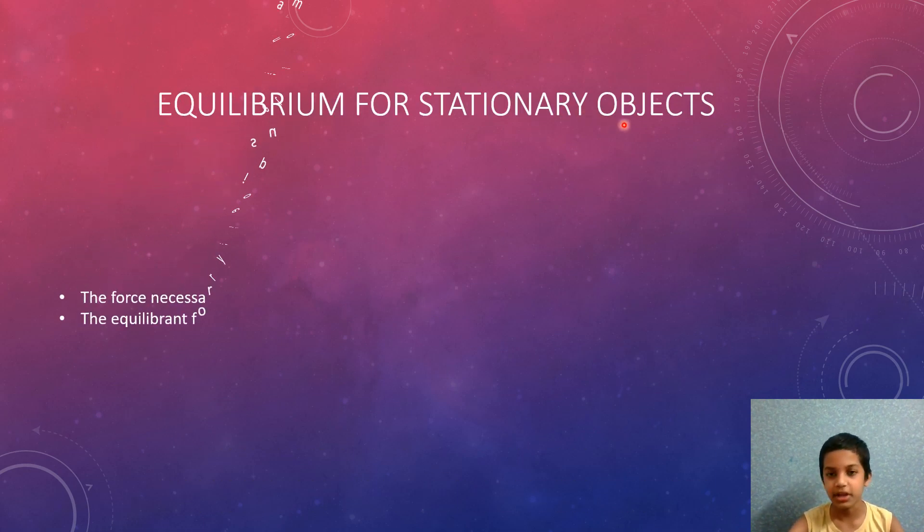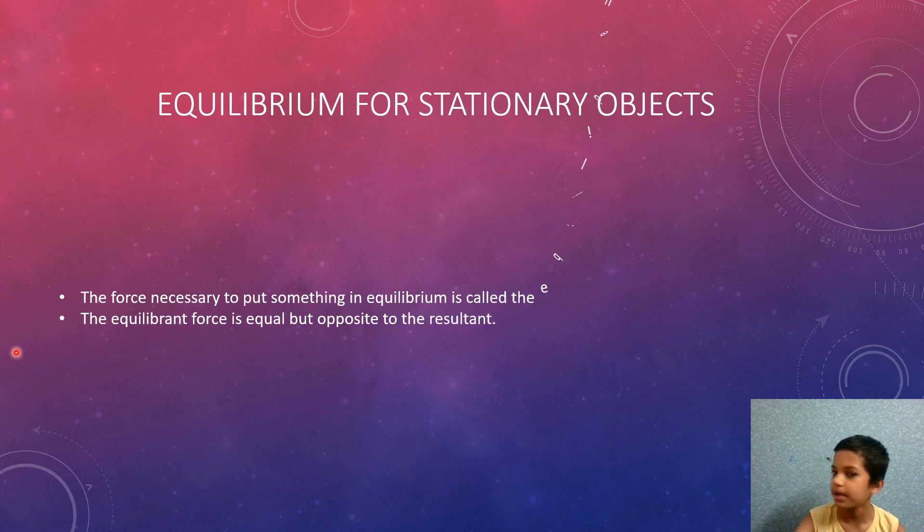Equilibrium for stationary objects: To find the force necessary to put something in equilibrium, first we need to find the resultant. The force necessary to put something in equilibrium is called the equilibrant force. The equilibrant force is equal but opposite to the resultant.